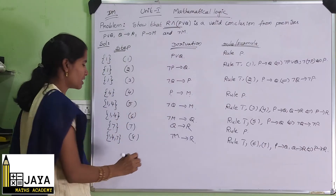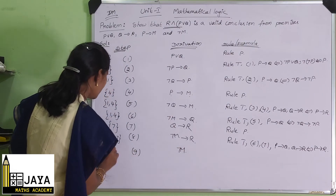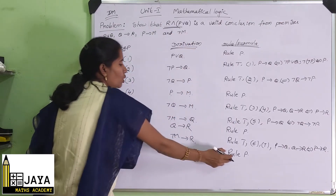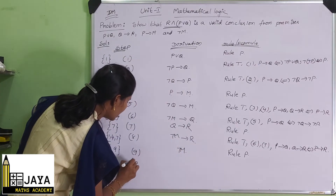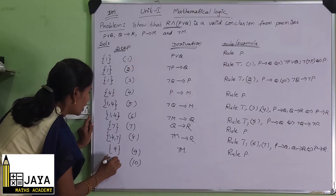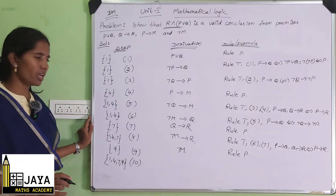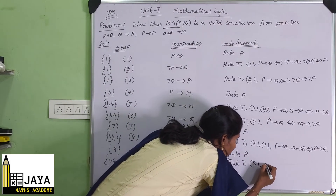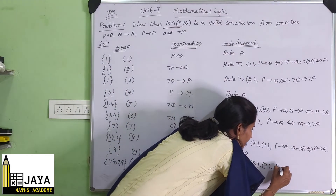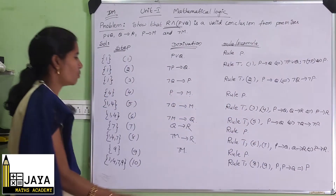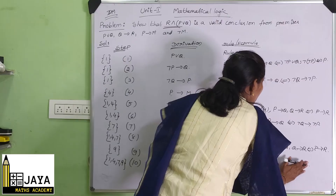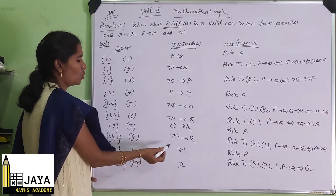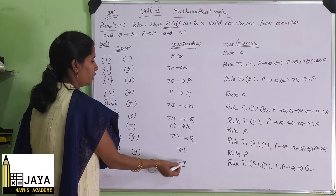Next, in the ninth step, take the premise negation M — rule P. Then in the tenth step, using the eighth and ninth steps with rule T, and premises one, four, seven, and nine, we apply the formula: P and P implies Q gives Q. So from negation M and negation M implies R, we get R.